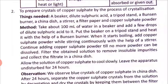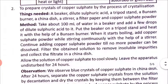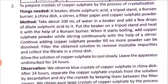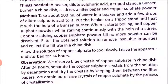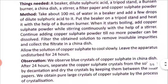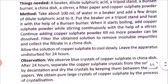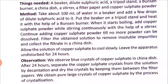Second question: how will you prepare crystals of copper sulfate? To prepare crystals of copper sulfate by the process of crystallization, you need: a tripod stand, a Bunsen burner, a china dish, a stirrer, filter paper, and copper sulfate powder. Method: take about 100 ml of water in a beaker, add a few drops of dilute sulfuric acid to it, then put the beaker on a tripod stand and heat it with the Bunsen burner.